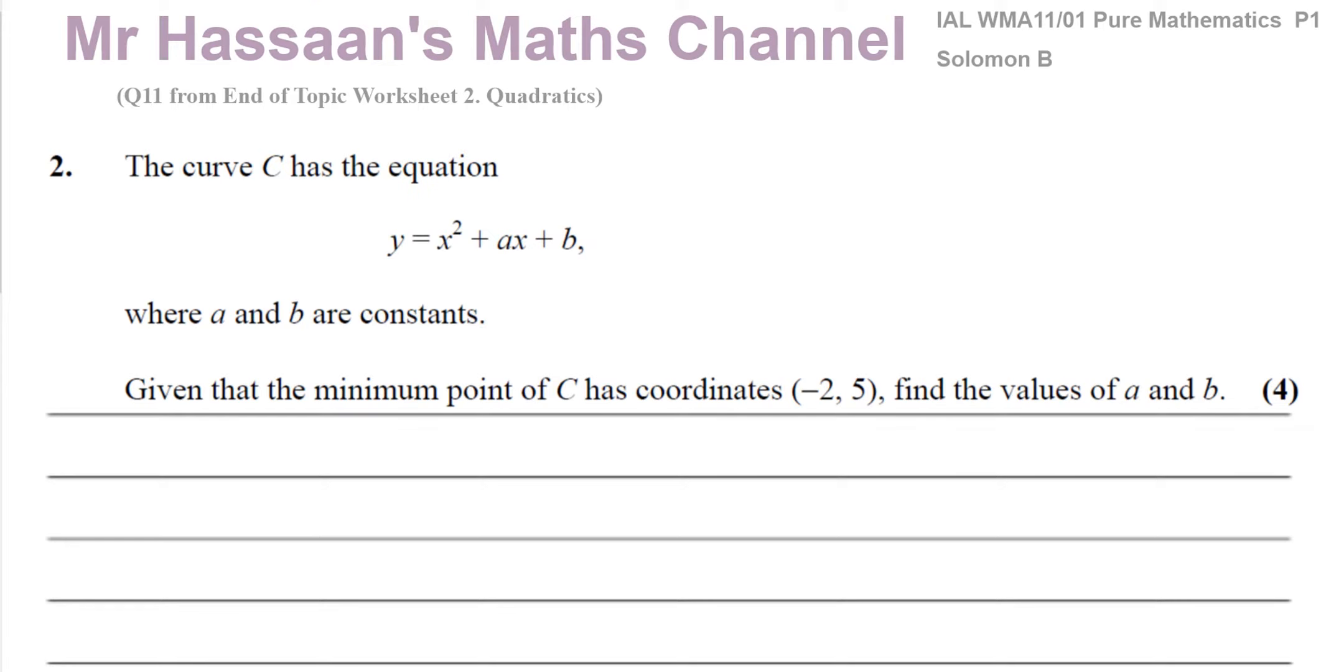This question tells us about this quadratic curve, y equals x squared plus ax plus b, where a and b are constants. Given that the minimum point of C has coordinates minus 2, 5, find the values of a and b.